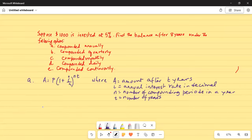So part A. P, I forgot to mention here, P is the original amount invested, original investment. So we have P equal to $1000, I is equal to 0.05. Compounded annually means N equal to 1 and T equal to 8 years.